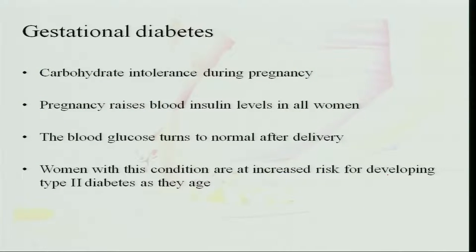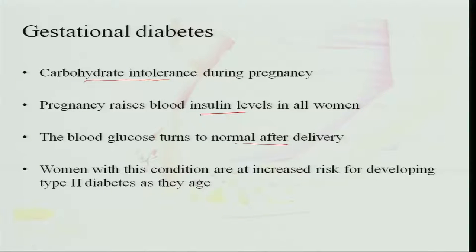Gestational diabetes is carbohydrate intolerance during pregnancy. Pregnancy raises blood insulin levels in all women and blood glucose returns to normal after delivery. Women with this condition are at increased risk of developing diabetes at a later age.